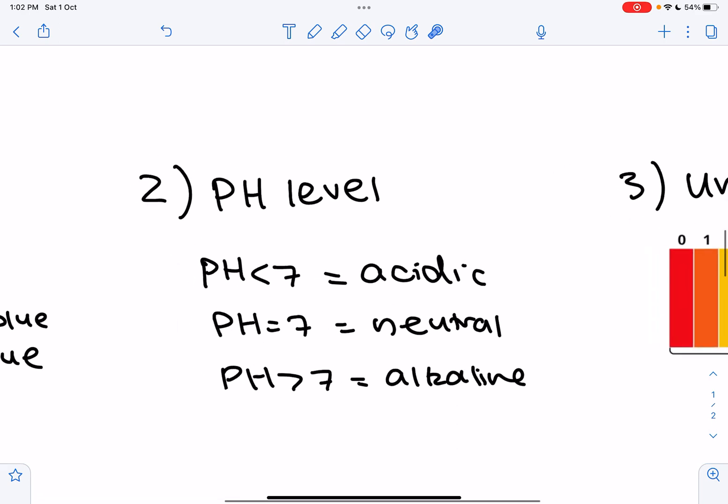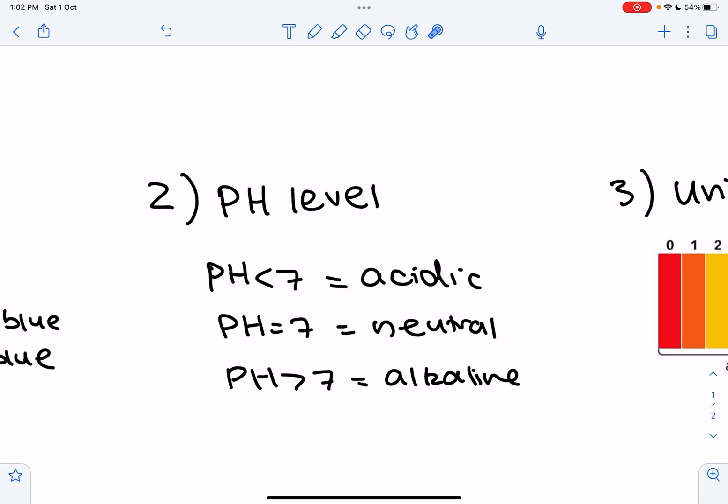Secondly, the way to just tell if it's an acid or an alkali is by the pH level. So if the pH is less than 7, as we mentioned, it is acidic. If it is equal to 7, it is neutral. And if it's greater than 7, it's alkaline.